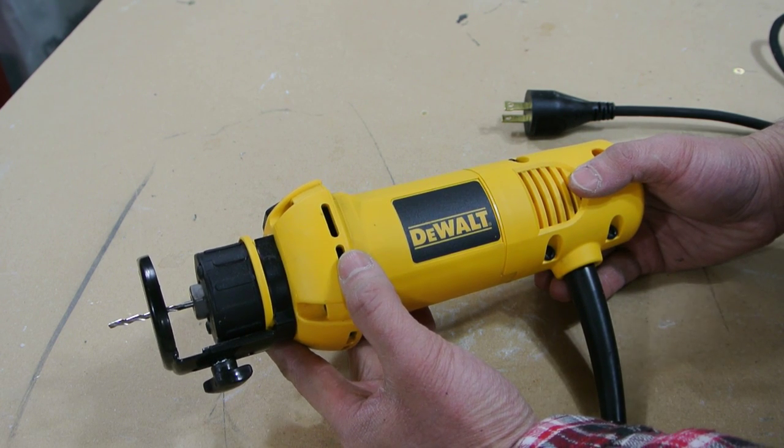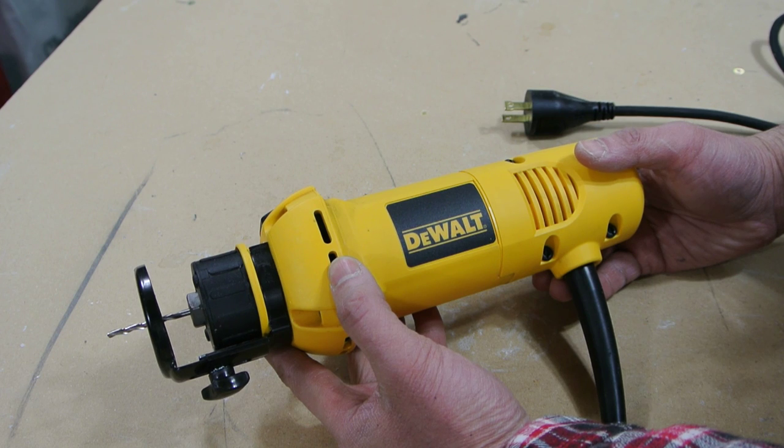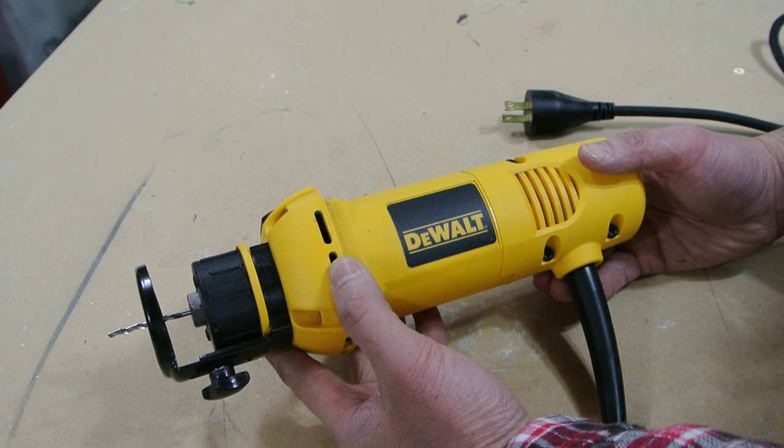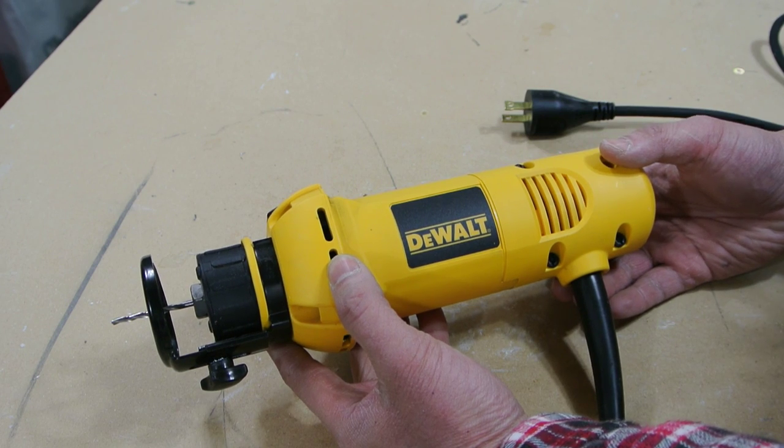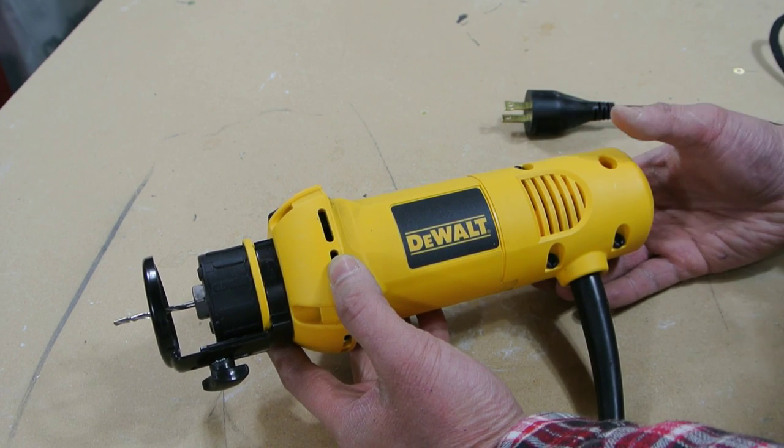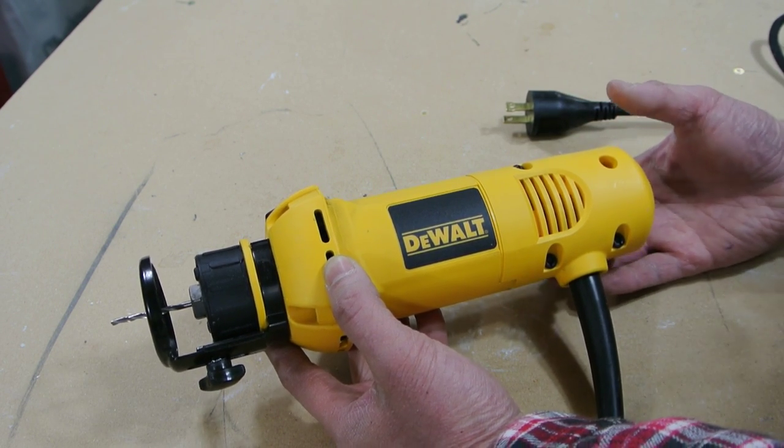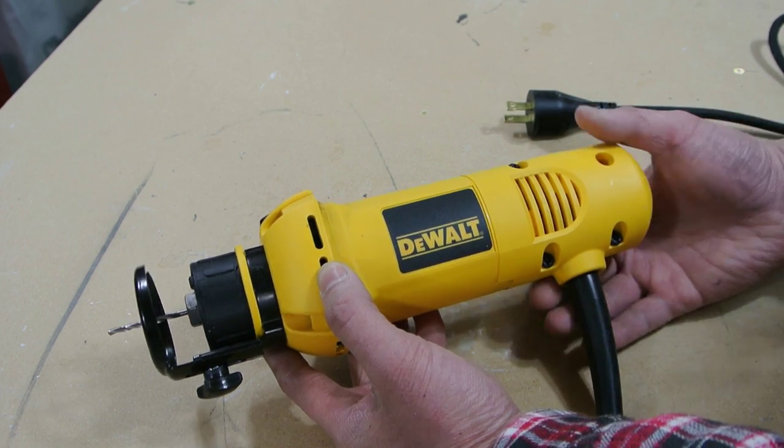Very similar to a Roto Zip, I think that's the name of it. There's a couple different versions of these types of tools out there. I just happen to get this DeWalt one because it's a great price. I picked this guy up for I believe it was 60 Canadian dollars, so it was a good buy.